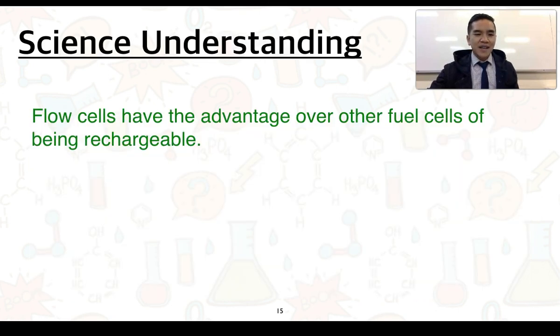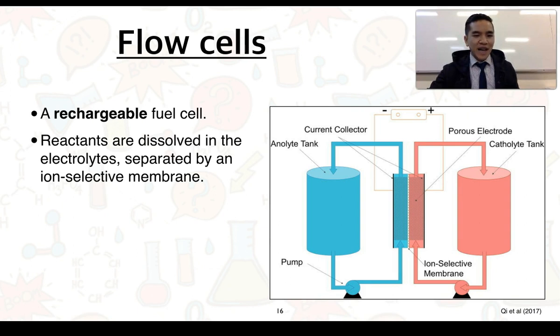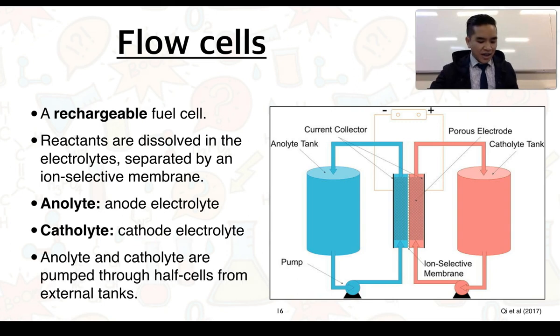For our last science understanding, flow cells have the advantage over other fuel cells of being rechargeable. So we're just going to look at what these so-called flow cells are. Flow cells we can define as a rechargeable fuel cell. Flow cells are typically different because the reactants themselves are dissolved in the electrolytes, and these electrolytes are separated by an ion-selective membrane. So that ion-selective membrane would be here between the two electrodes. We have two different electrolytes. One's called the analyte, and the other's called the catholite. The analyte is the electrolyte at the anode, and the catholite is the cathode electrolyte. These analytes and catholites are pumped through half cells from external tanks.